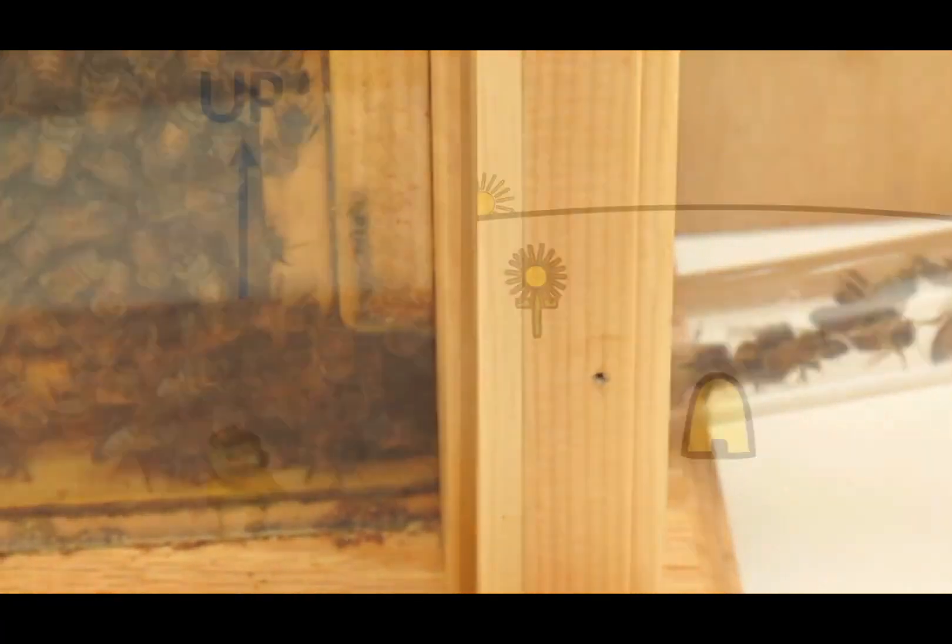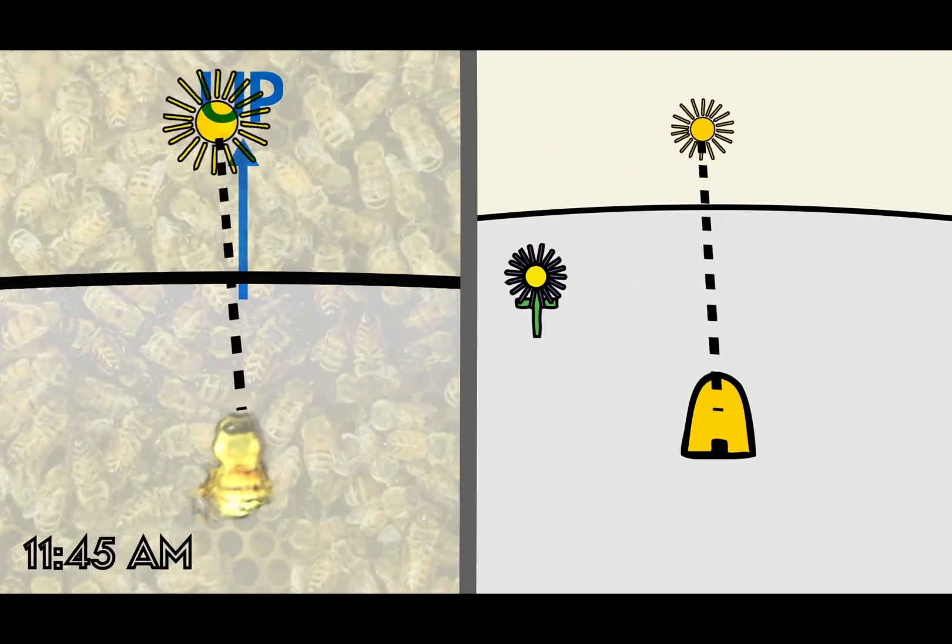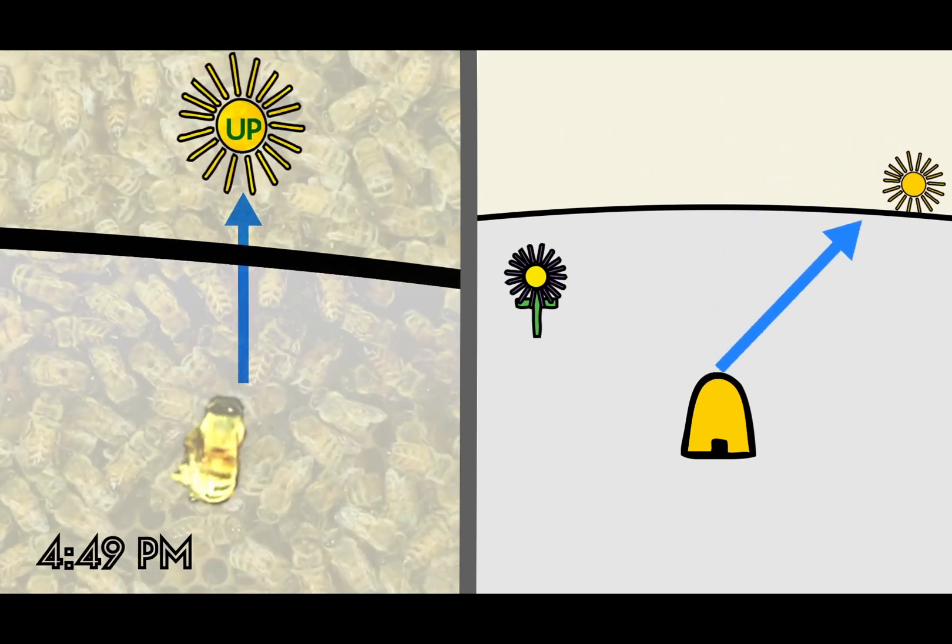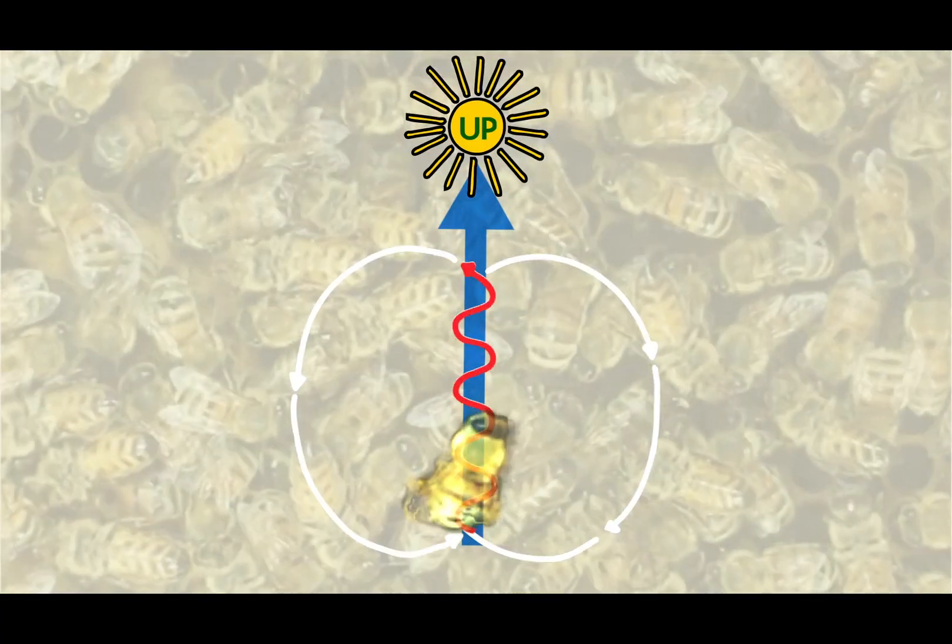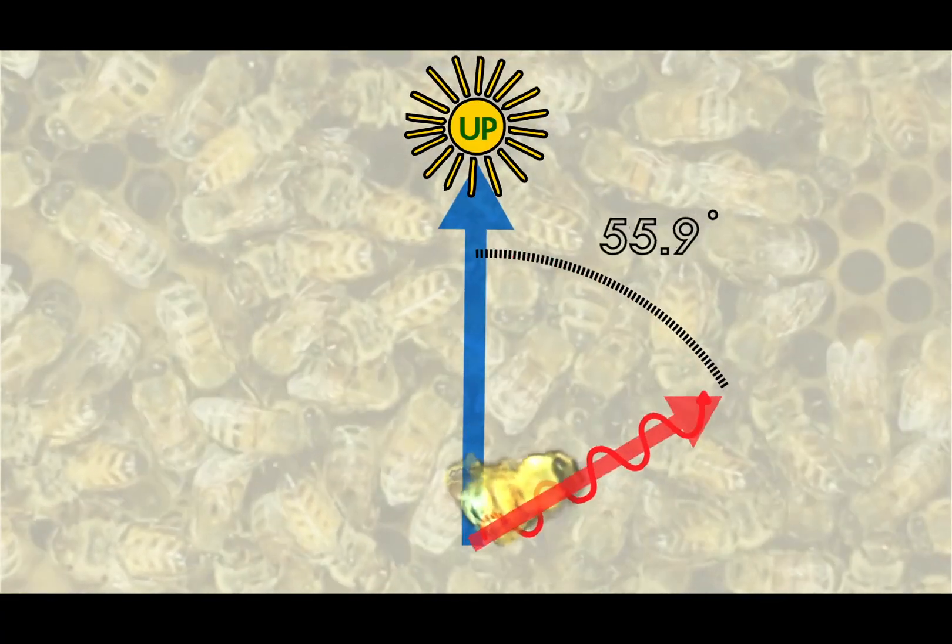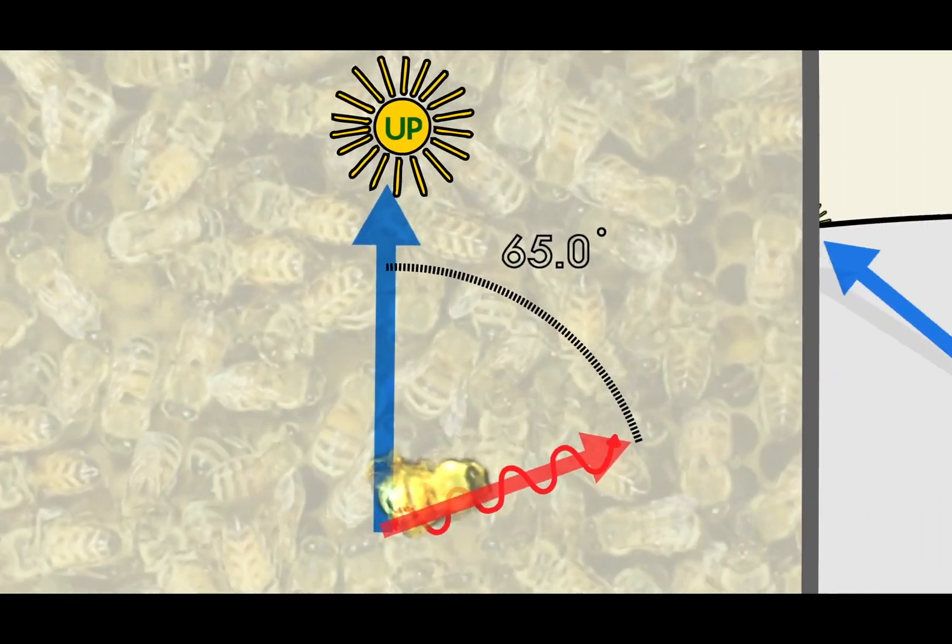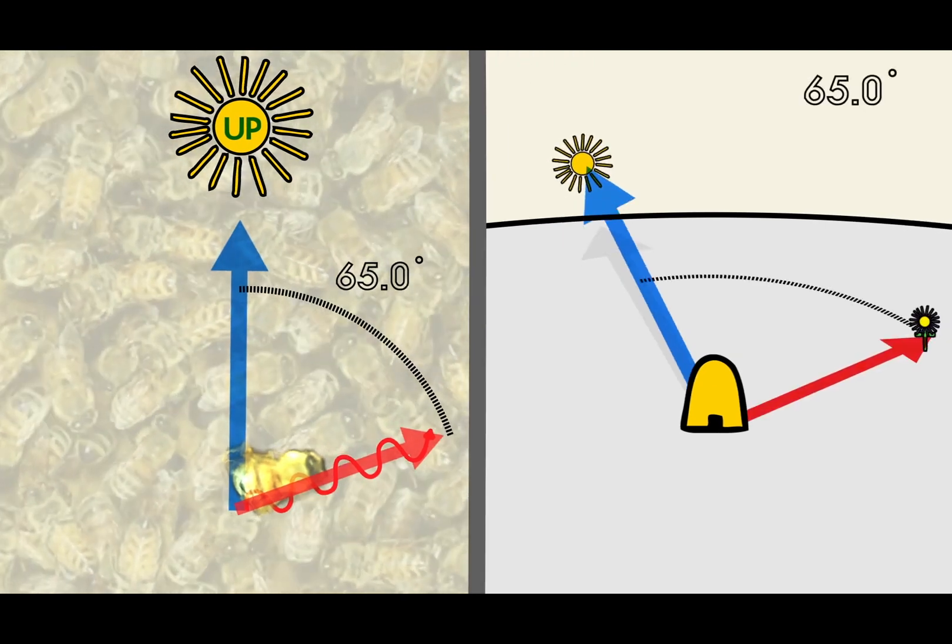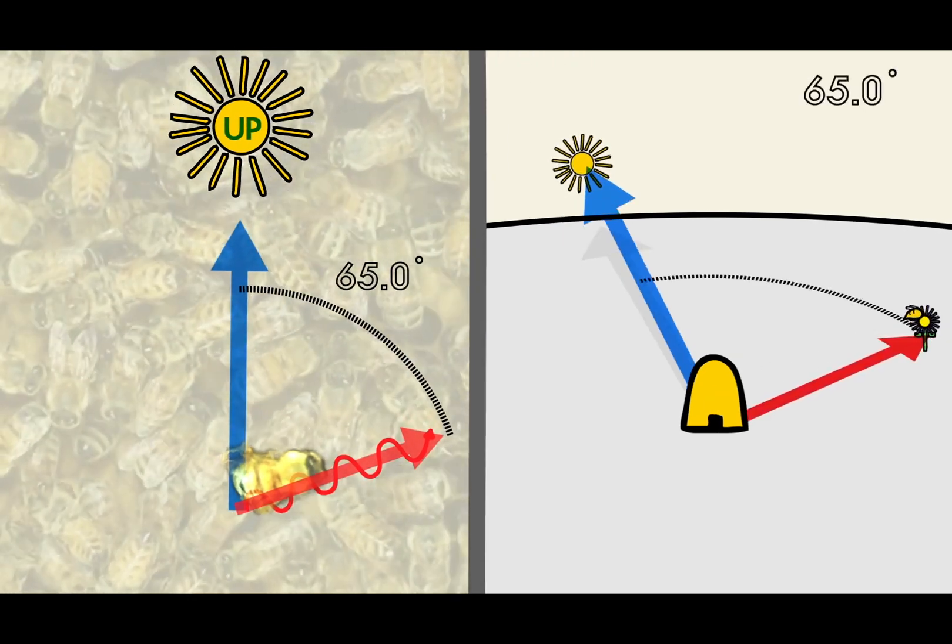Within the hive, the direction up, away from gravity, substitutes for the location of the sun. Then the angle that the bee dances compared to this up direction is the same angle a bee should fly away from the sun in order to find the target flower.